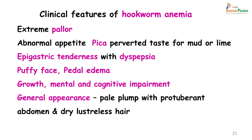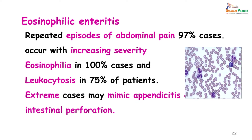Clinical features of hookworm anemia include extreme pallor, abnormal appetite, and perverted taste for mud and lime. Epigastric tenderness with dyspepsia is often a feature, and as blood loss continues the patient will have a characteristic puffy face and pedal edema. In young children under 5 years, growth is stunted, mental and cognitive impairment occurs, resulting in a child who is pale and plump with a protuberant abdomen and dry, lusterless hair.